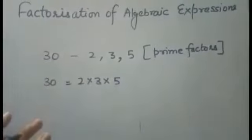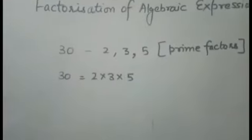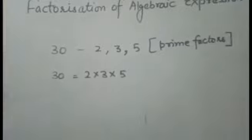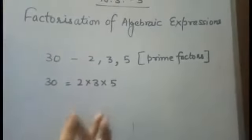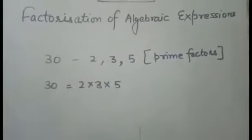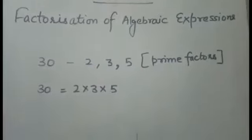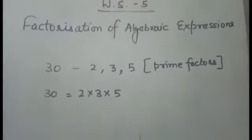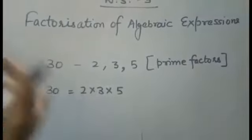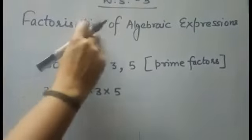Similarly, to find the factors of an algebraic expression, we shall write it as the product of two or more algebraic expressions. Each expression is a factor of that given algebraic expression. The process of writing a given algebraic expression as the product of two or more algebraic factors is known as factorization.